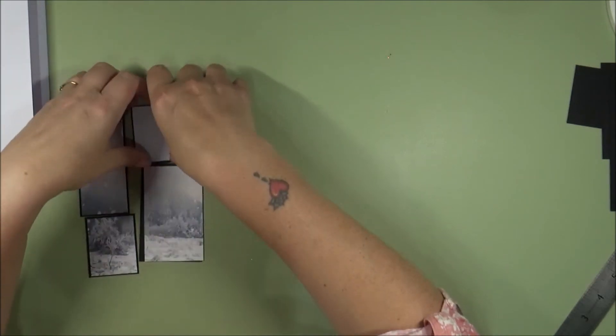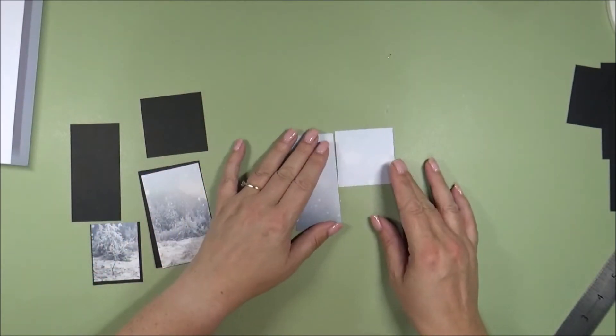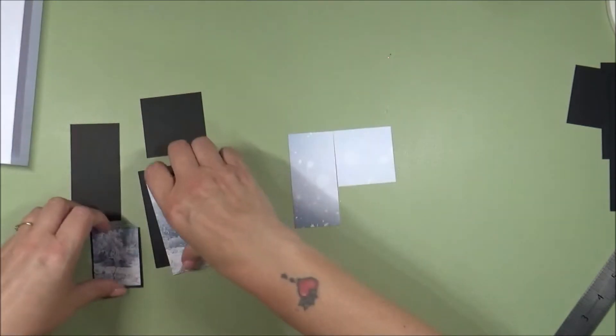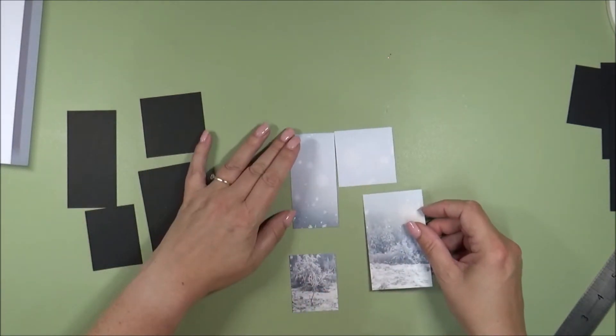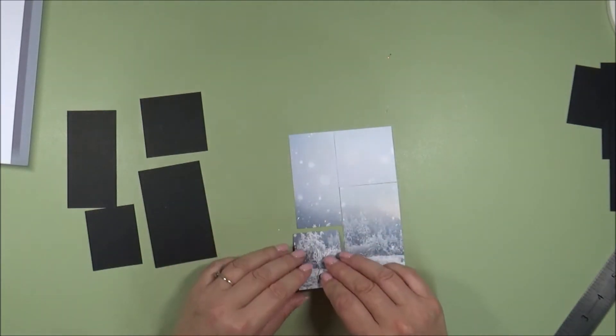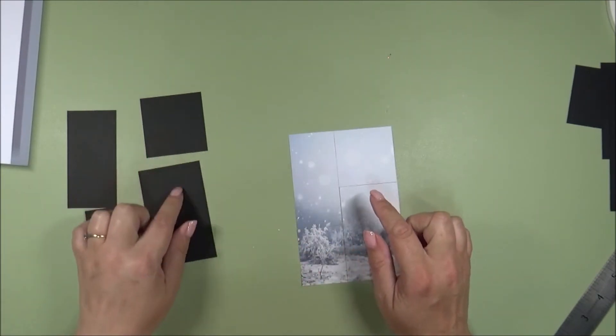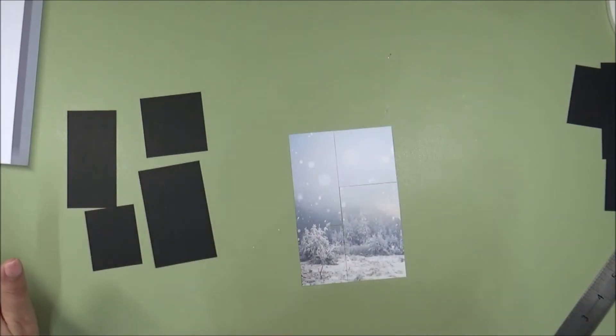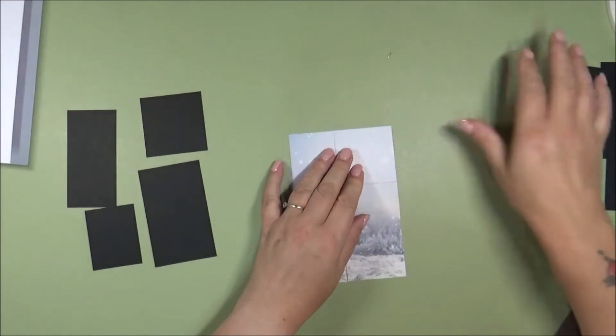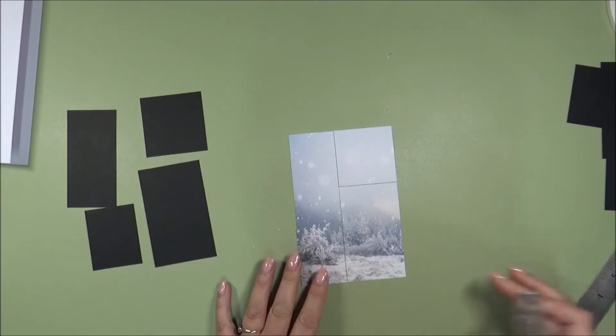And before I stick them to the black mats, you can just stick them now as is. But what I'm going to do is just add a bit of sparkle. I cannot have a Christmas card without sparkle. But as I say, if you don't want to have any sparkle, then you can just go ahead and stick these pieces onto your black mats. But what I'm going to do, I'm going to heat emboss my sentiment, my Merry Christmas sentiment. And I'm also going to put some snowflakes on there as well.